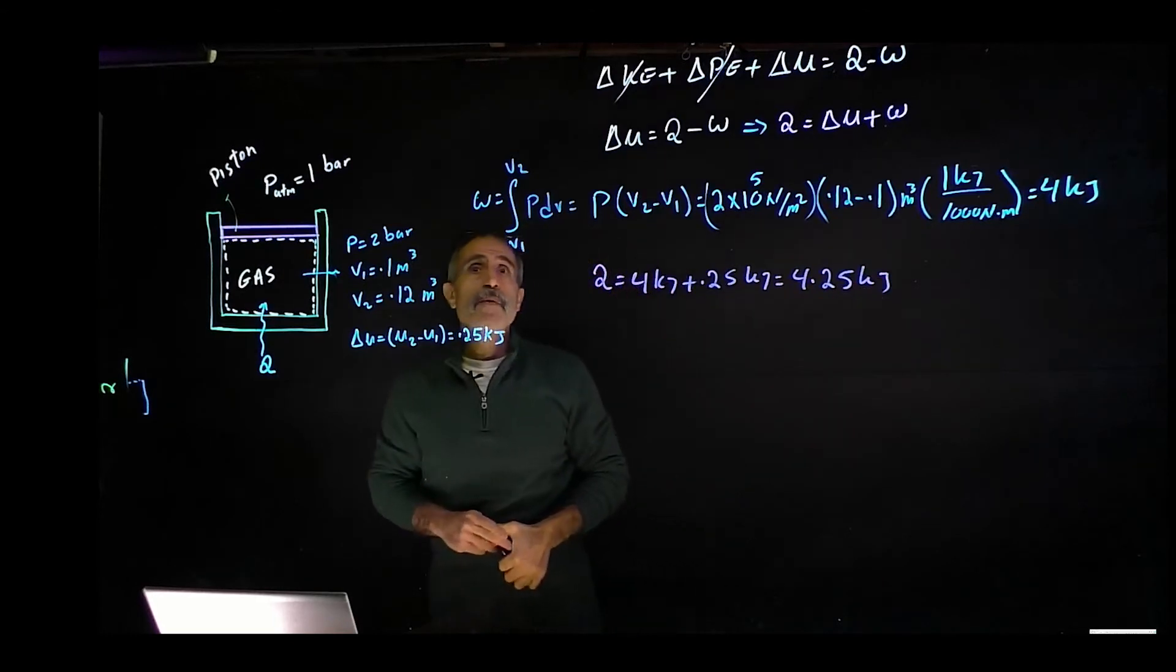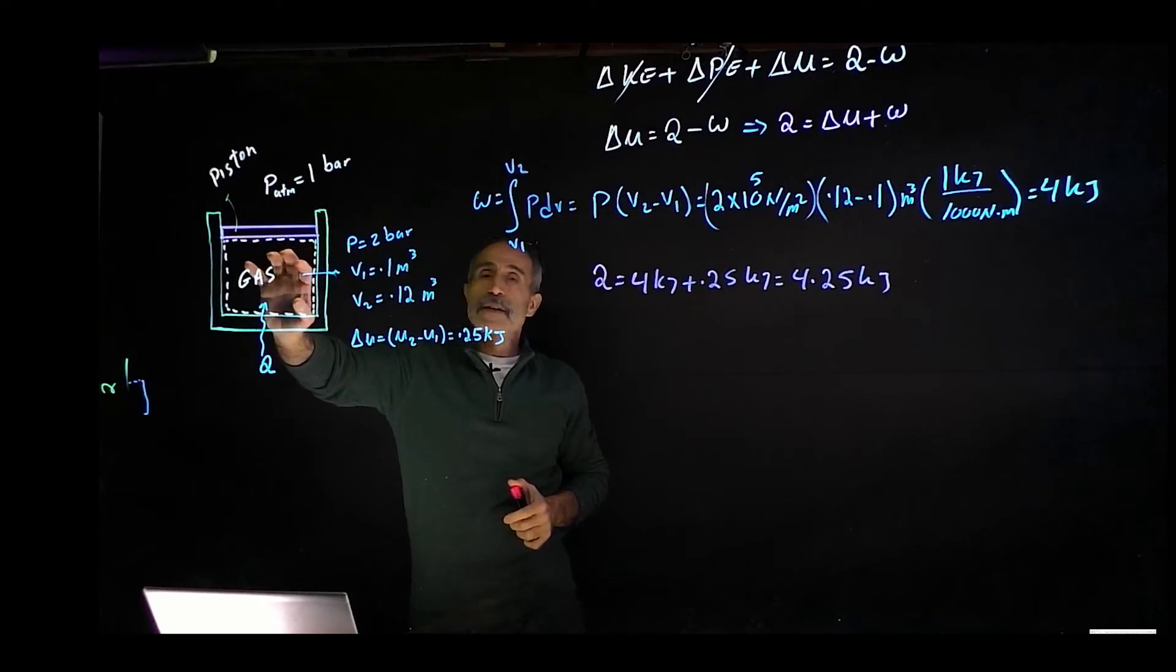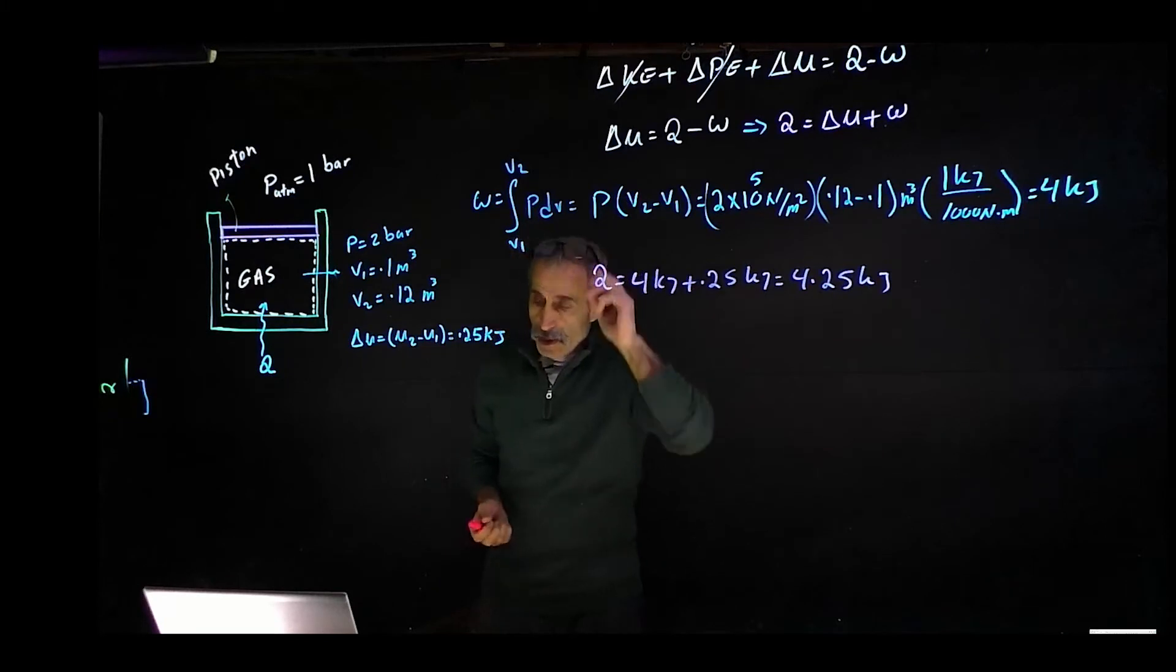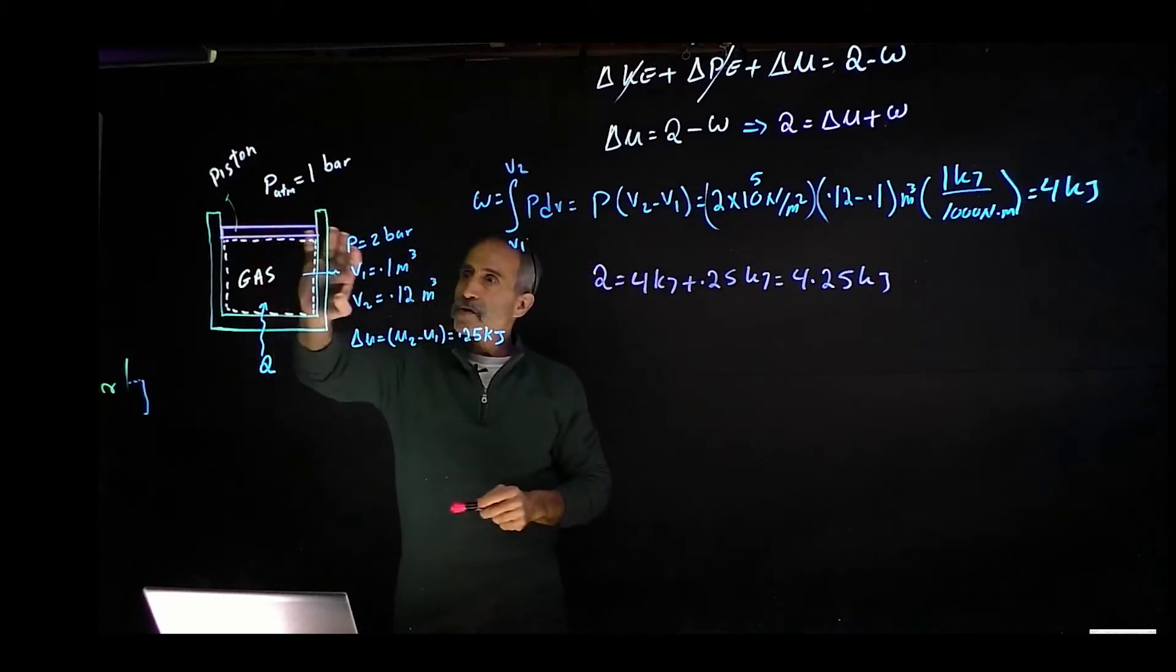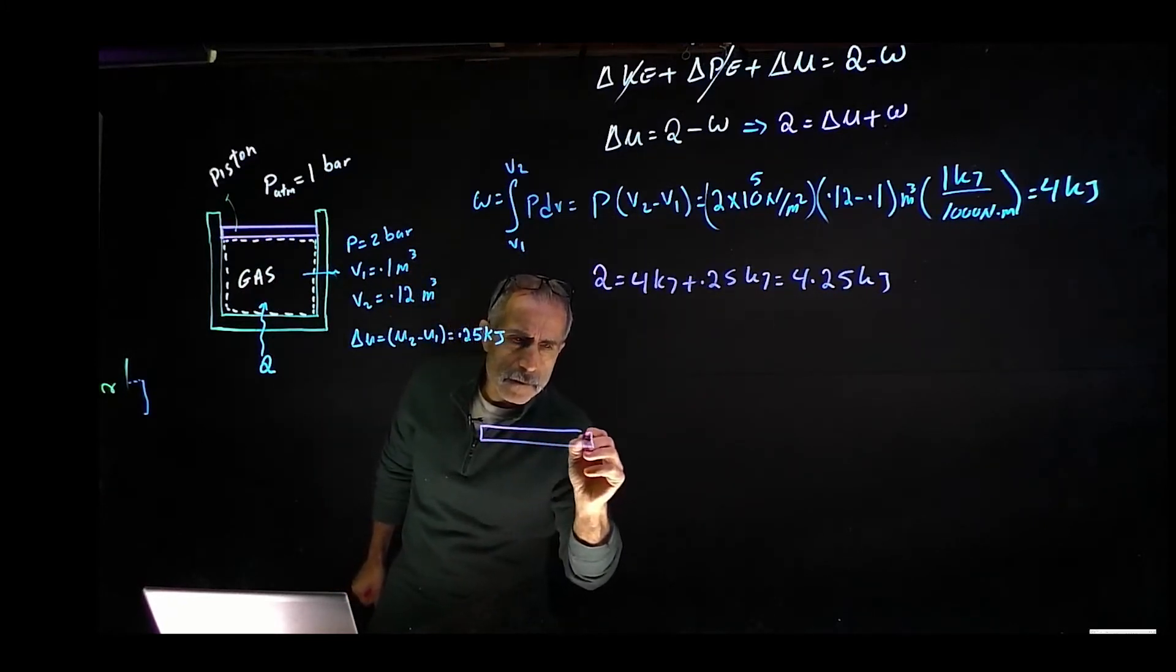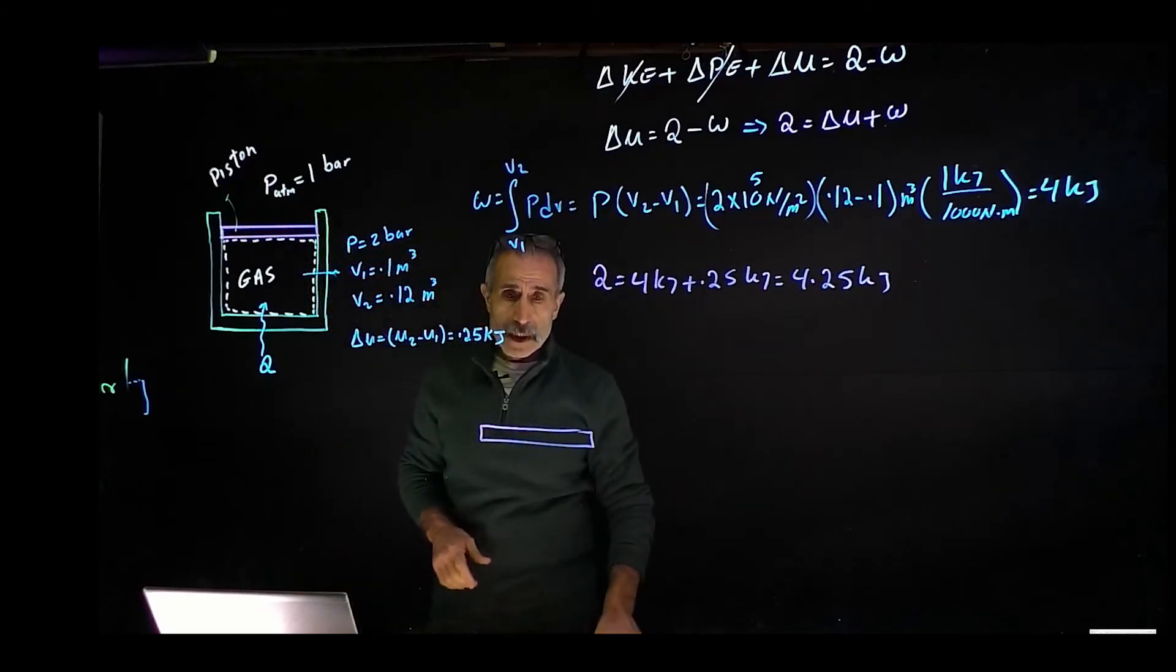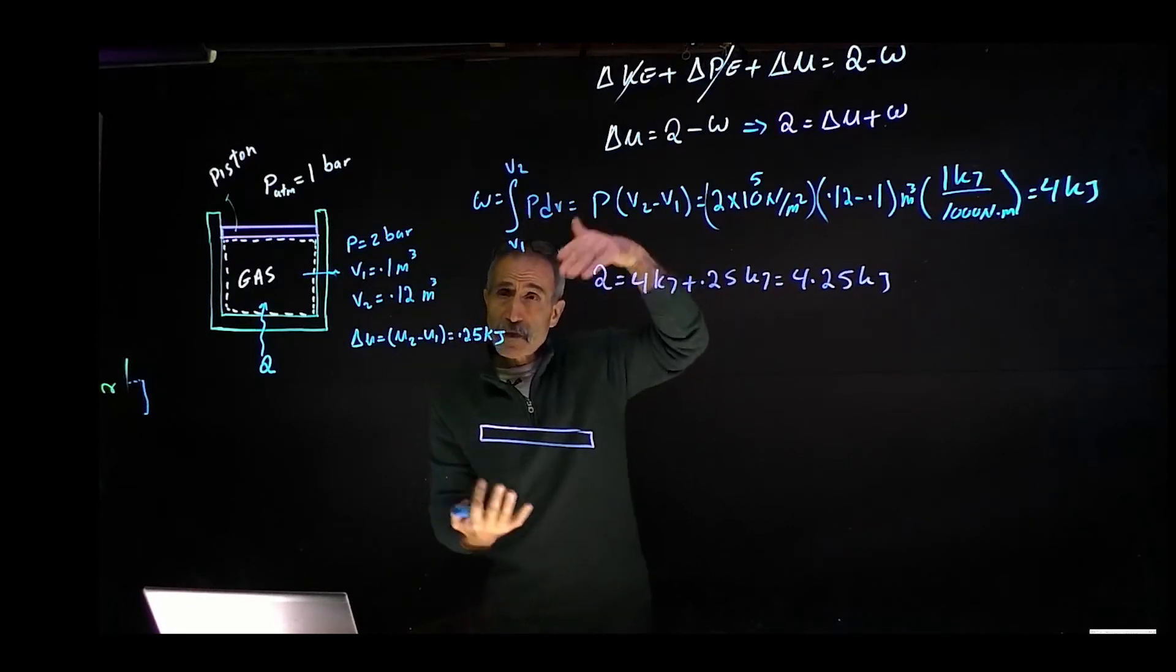Okay. So now we found out for the system that we isolate just the gas itself right here, Q is going to come out to 4.25 kilojoule. Then next, we want to go ahead and look at the piston itself. So let me draw just the piston out right here. That's the piston, bring it over here. And we have two forces acting on this piston, or two pressures. We want to say forces.